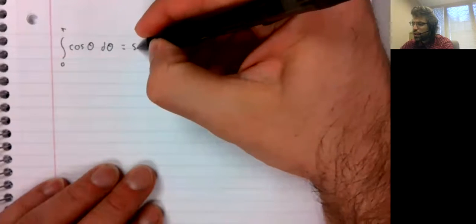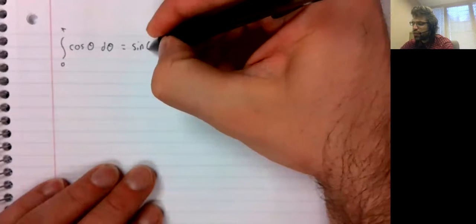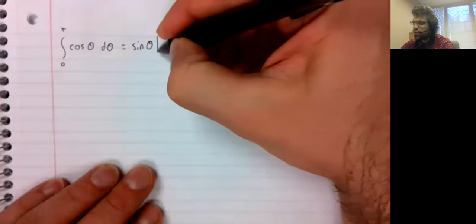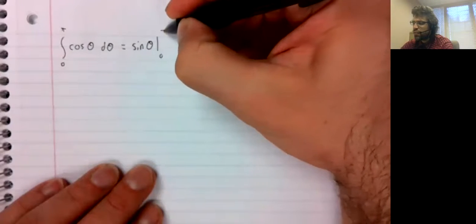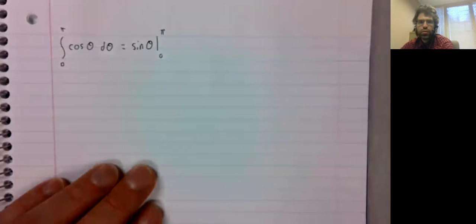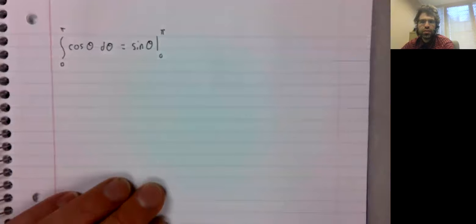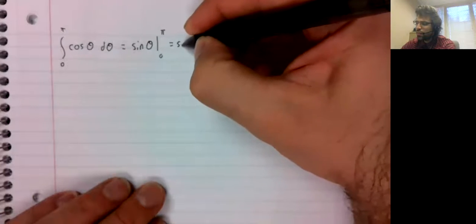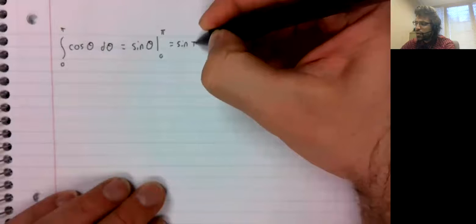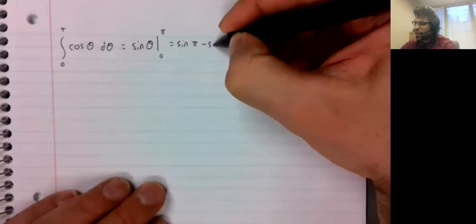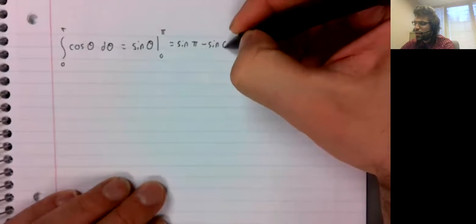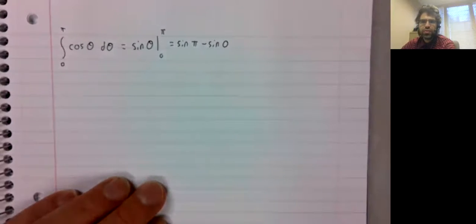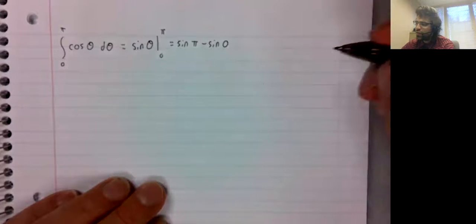An antiderivative of the cosine is the sine. So we evaluate that from zero to pi, and we get the sine of pi minus the sine of zero.